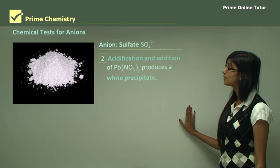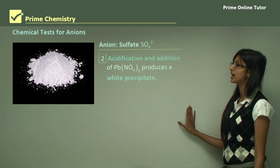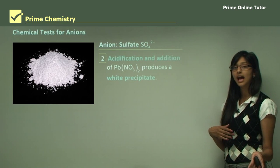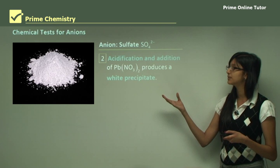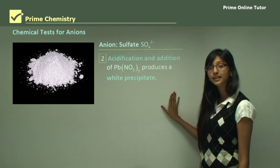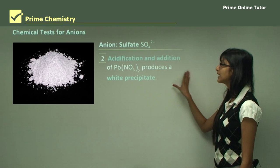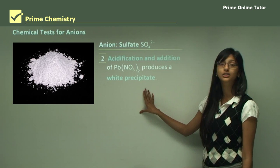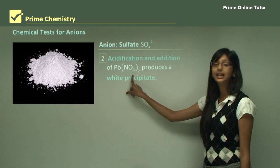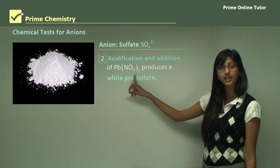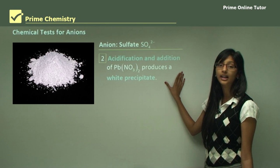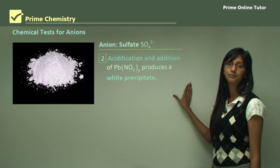Acidification and addition of lead nitrate also produces a white precipitate for sulfate. If you don't want to use barium, adding lead nitrate to an acidified solution will still produce a white precipitate indicating sulfate is present. You must make sure your solution is acidified first, otherwise no precipitate will form.